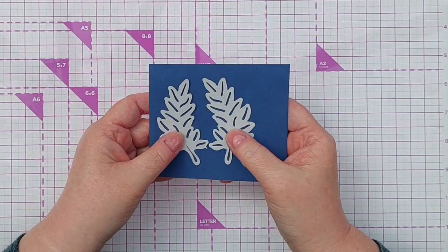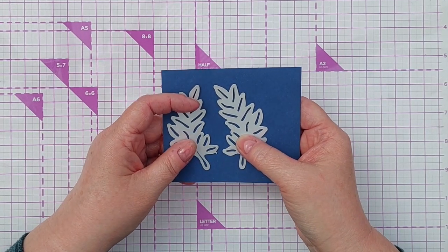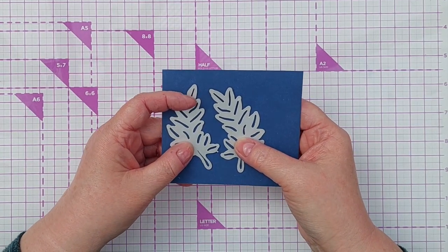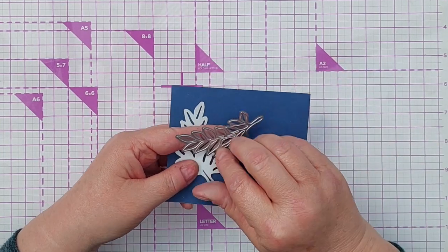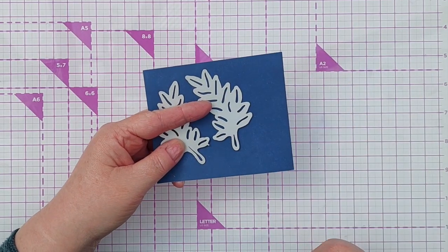I'm going to cut them out and then I'm going to run them through my die cutting machine again but with the embossing configuration so the pattern that you can see here, these little slits will be embossed into the leaves.